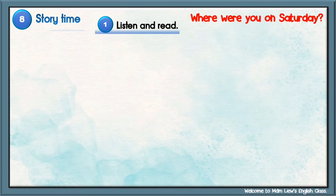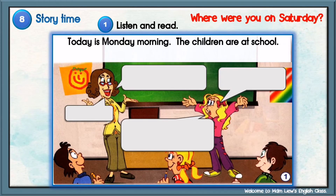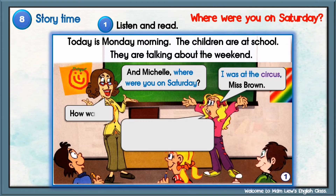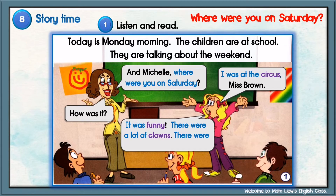Where were you on Saturday? Today is Monday morning. The children are at school. They are talking about the weekend. And Michelle, where were you on Saturday? I was at the circus, Miss Brown. How was it? It was funny. There were a lot of clowns. There were elephants and lions too.